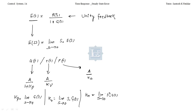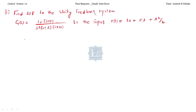Today we'll see the application of these formulas through problems. The first problem: find the steady state error for a unity feedback system where G(s) = 10(S+1) / [S²(S+2)(S+10)]. The type of this system is 2, and the order is 4. The input is R(t) = 10 + 5t + t²/2.